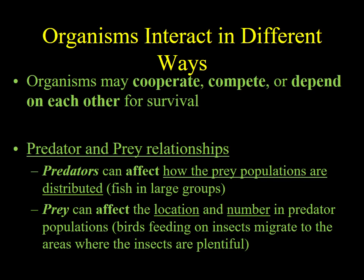There are other interactions to look at — cooperation and competition. Regarding predator-prey relationships, prey can protect themselves by grouping together in large numbers, like fish in schools. The prey can also affect the location of predators — for example, birds feeding on insects migrate to areas where the insects are. So predators move where the prey are, and prey protect themselves by being in large numbers.